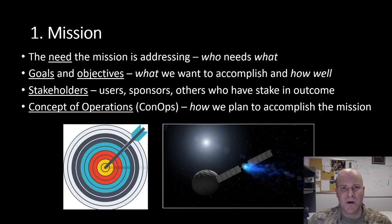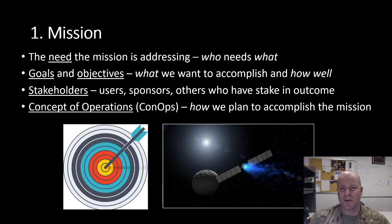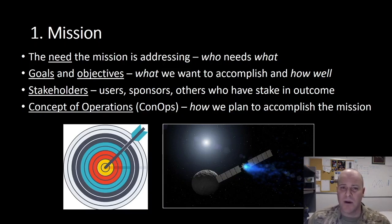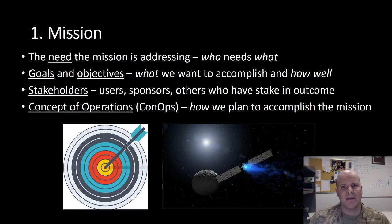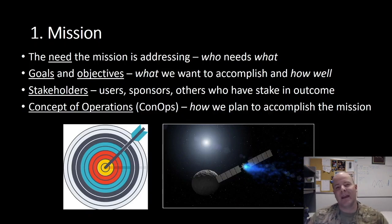The first is our mission. This part of our space system is really talking about our purpose — who needs what, why are we actually doing what we're doing, what key need, what key capability are we hoping to deliver? We've also got goals and objectives: what do we want to accomplish, and how well? We're going to talk about stakeholders — those with a vested interest in the outcome — identifying users and sponsors. Lastly, we have the concept of operations, which is how we're planning to accomplish this mission and how that works out in the details.